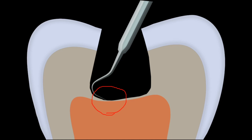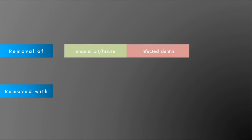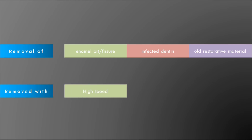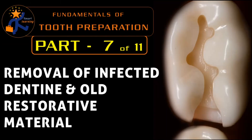In this part we have studied about removal of enamel pits and fissures, infected dentine, and old restorative material, which can be removed with a high speed handpiece, a low speed handpiece, and hand instruments like a spoon excavator. That's all about the removal of infected dentine and old restorative material. Thank you for watching. Have a nice day.